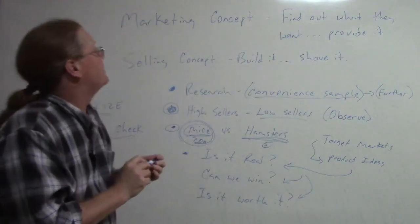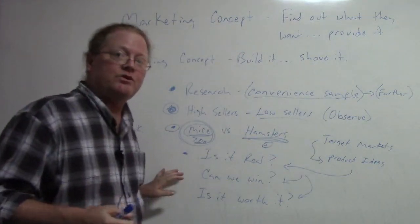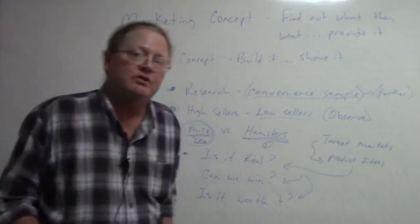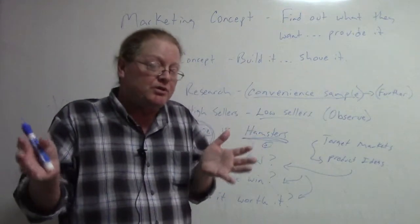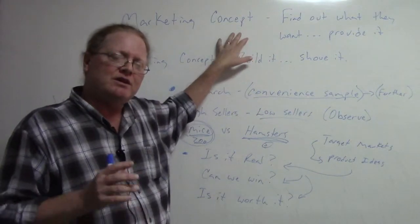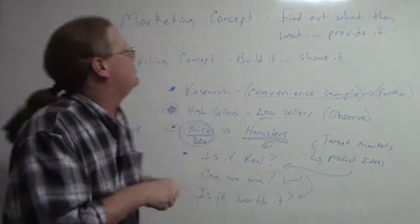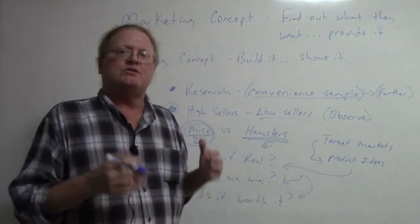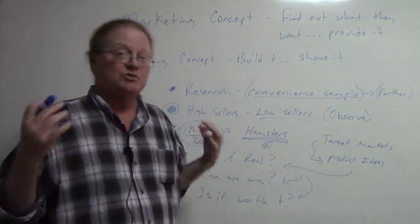So there we go. So this is part one of your assignment to go and look. You've already got a hunch that people want your product. Let's go get some proof so we can practice the marketing concept and do risk minimization. Minimize our risk with this venture. Thinking strategically.